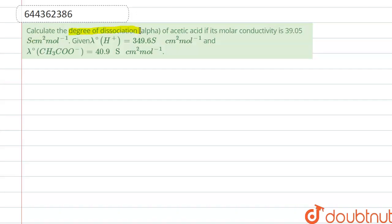Hello everyone, here the question is: Calculate the degree of dissociation of acetic acid if the molar conductivity is given, that is 39.05 siemens centimeter square per mole. Given lambda H+ is 349.6 and lambda CH3COO- is 40.9.